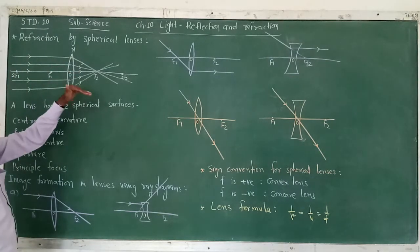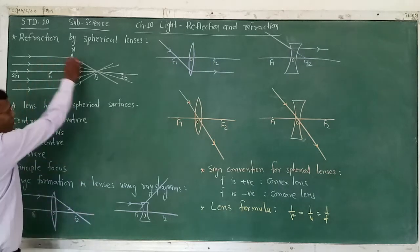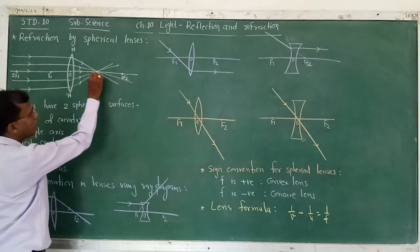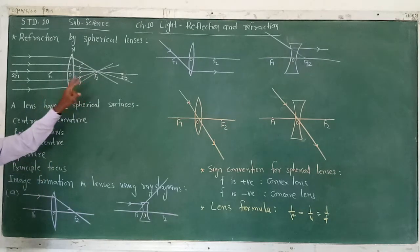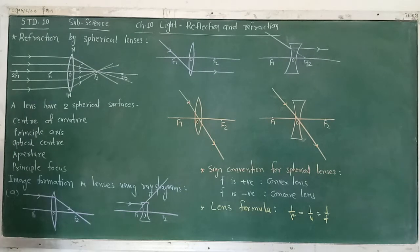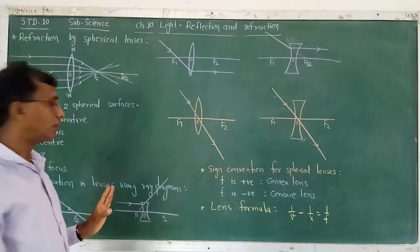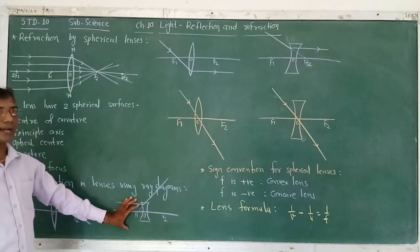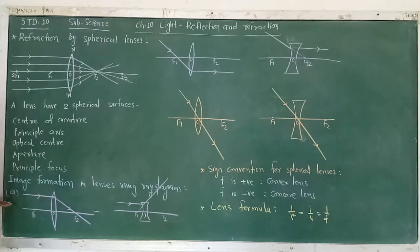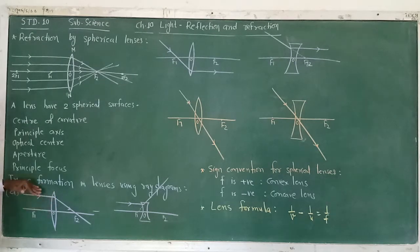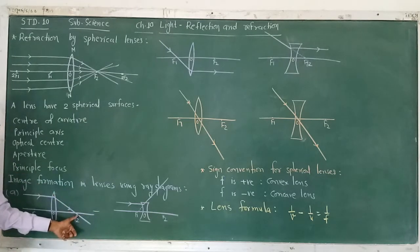For image formation using ray diagrams: first, a ray incident parallel to the principal axis, after refraction through a convex lens, passes through the principal focus F2 on the other side. For a concave lens, a ray parallel to the principal axis, after refraction, appears to diverge from the principal focus F1 on the same side.